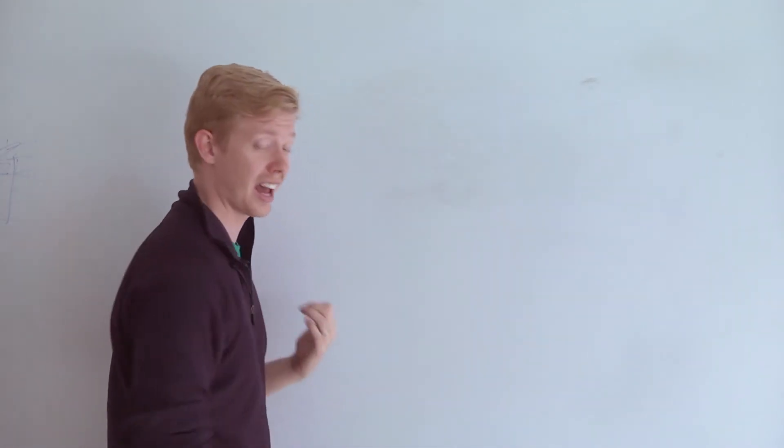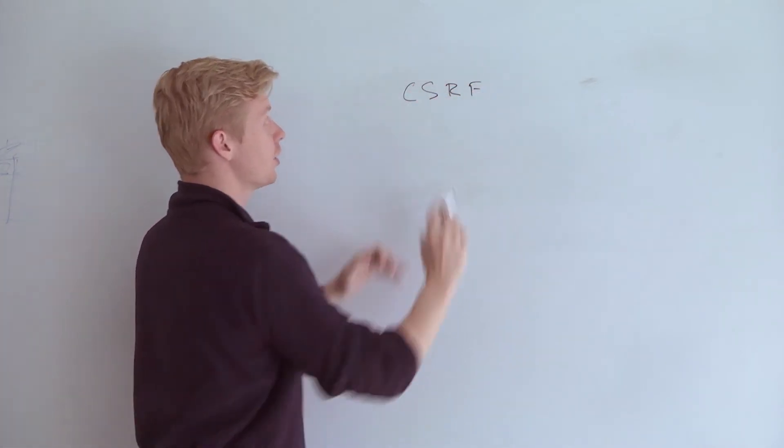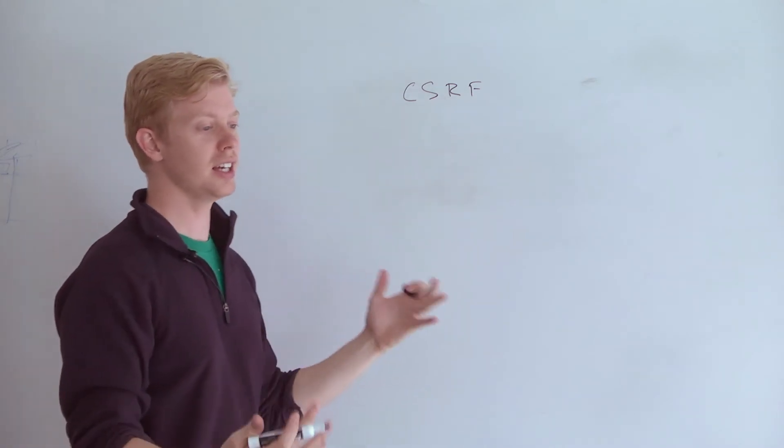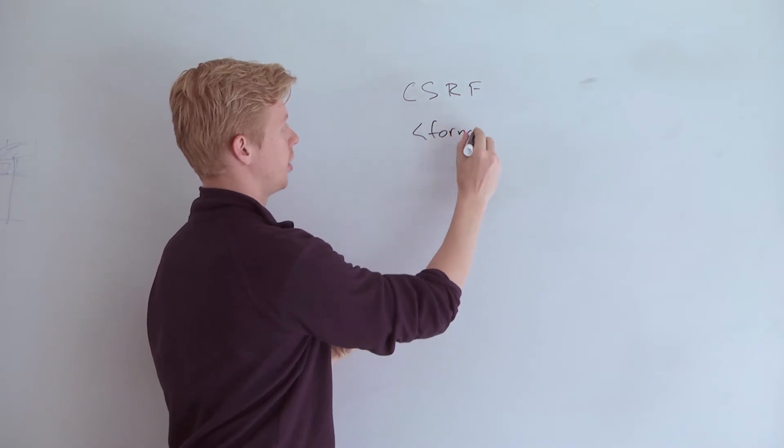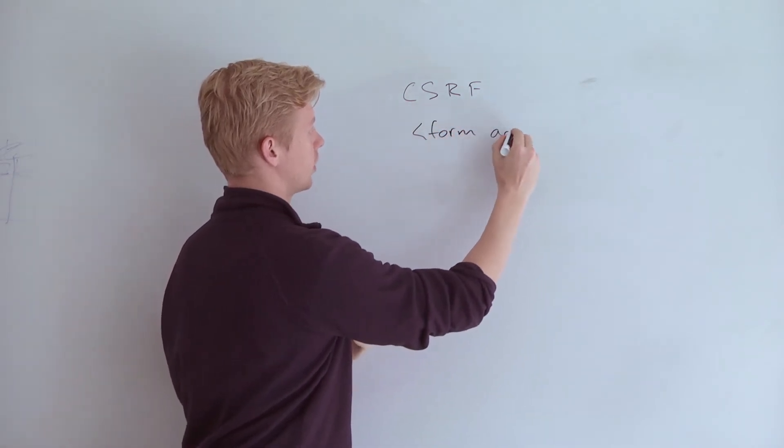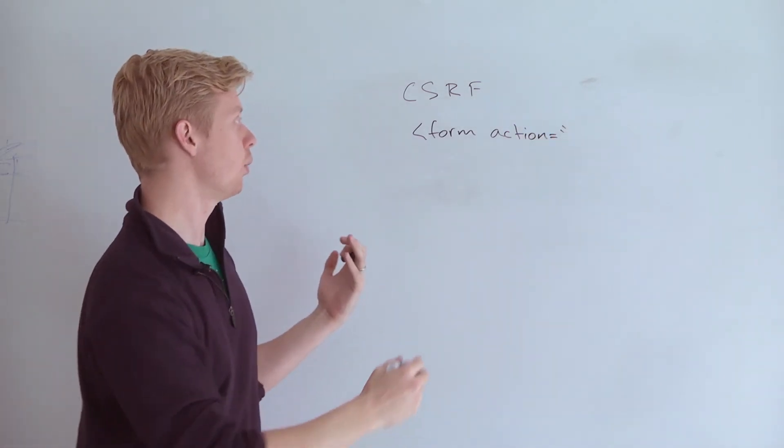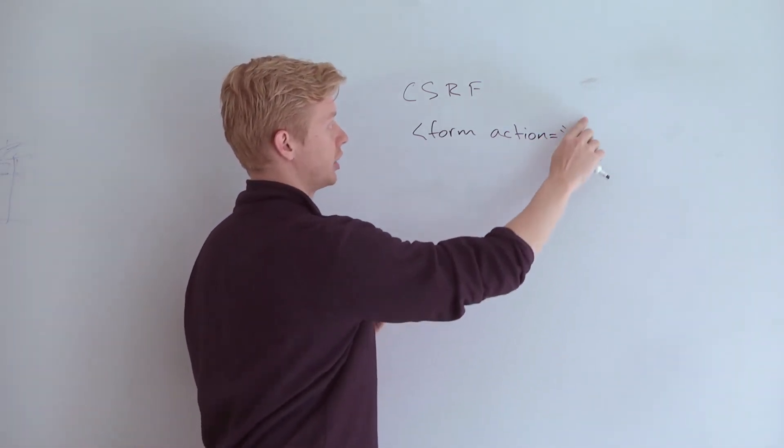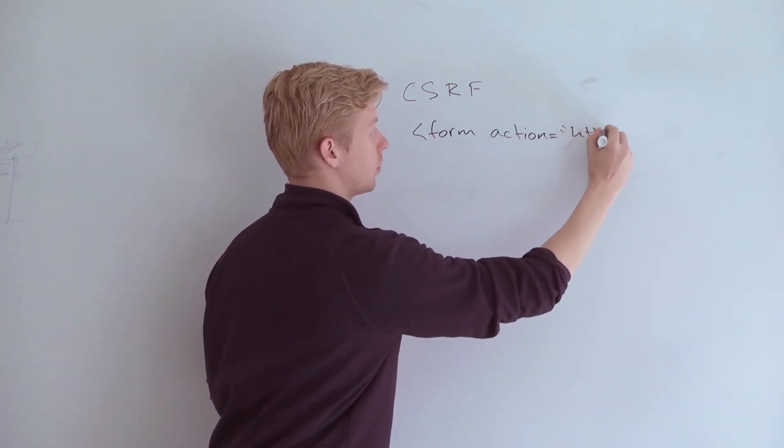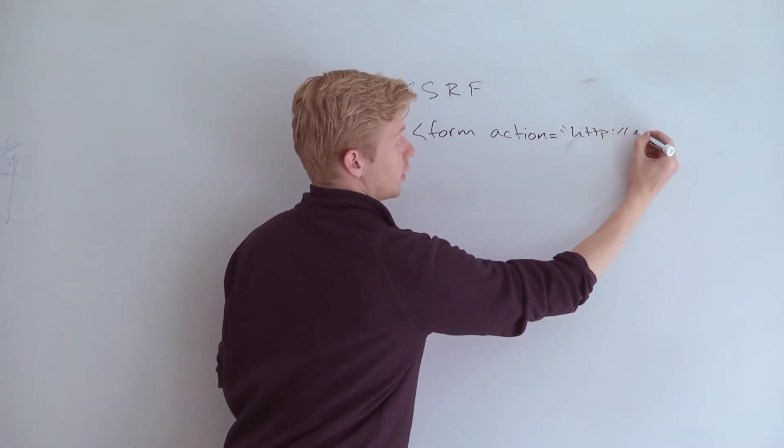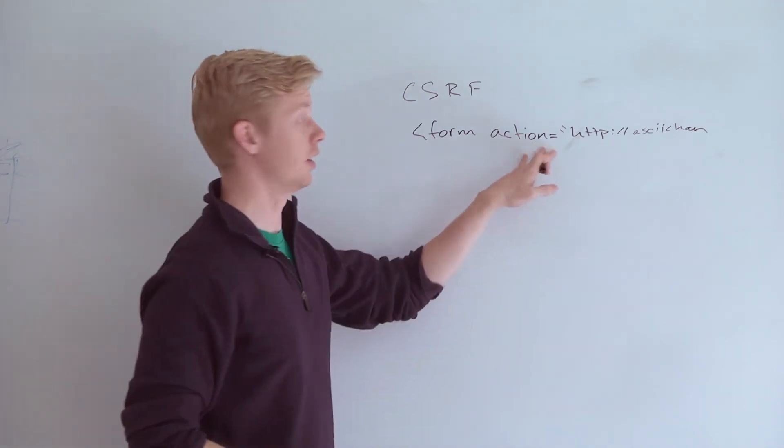There's one other huge class of attacks, and this is actually a relatively modern thing. It's called CSRF. This one's really fun. The general idea is, remember how we've talked about forms. Forms have an action attribute. That is where you want to submit the form. Now, we've always been doing things like slash or not specifying it, which submits the current URL, but you could put a full URL in here, and this could just have a completely different site. ASCII Chan, which incidentally has this vulnerability in it.